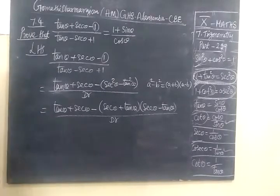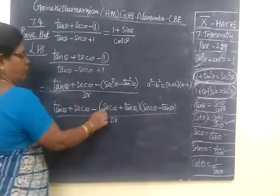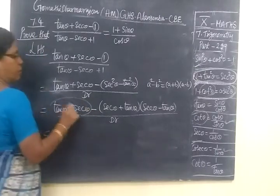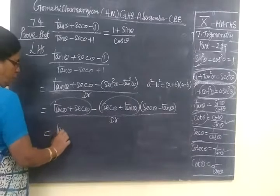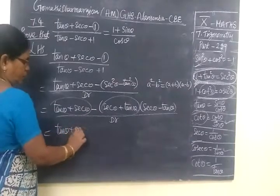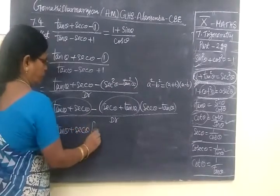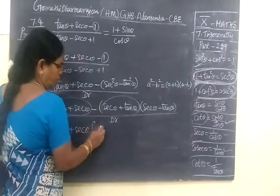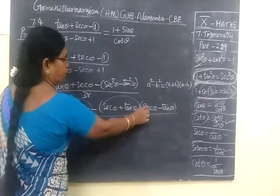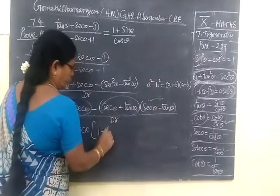We select through the member. At least minus 1. 1 minus tan θ minus sec θ minus tan θ.